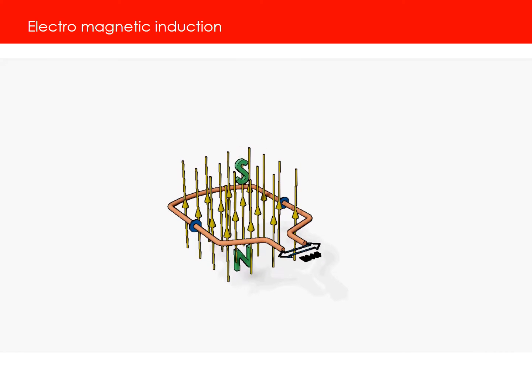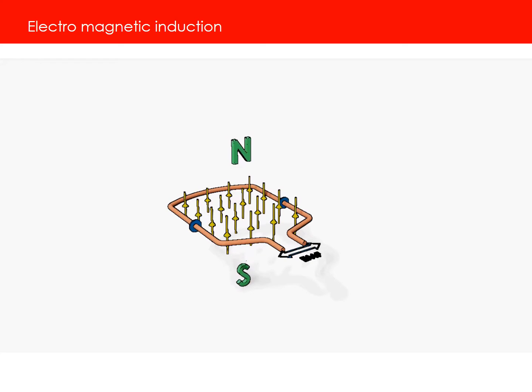The basic working principle of a transformer is simple – electromagnetic induction. According to this principle, a varying magnetic flux associated with a loop will induce an electromotive force across it.